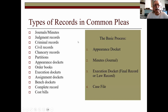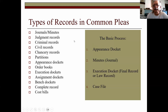There are all kinds of records in Common Pleas court: journals, minute books, judgment records, criminal records, civil records, chancery records including divorces, partitions, appearance dockets, order books, execution dockets, assignment dockets, bench dockets, complete records, and cost bills. The basic process starts with an appearance docket — basically the court schedule — then the minutes or journal recording what went on in court and who the attorneys were. The execution docket gives the court's decision, penalties, and charges to the losing party. Sometimes that's called a law record or a final record, depending on the county and time period.